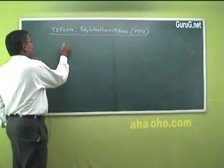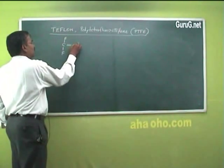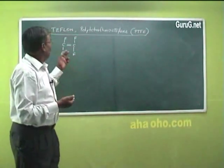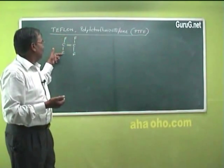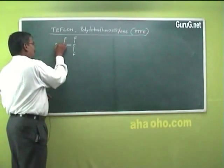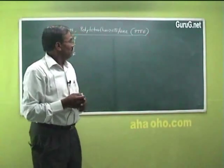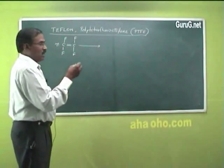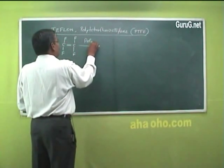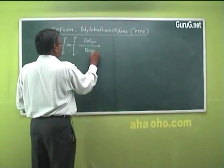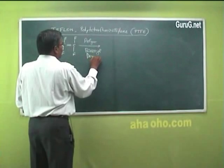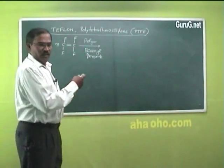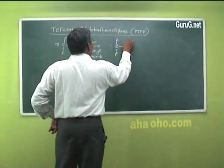Teflon is obtained by the polymerization of tetrafluoroethylene. The structure is similar to ethylene, but in place of four hydrogen atoms, we have four fluorine atoms. As with PVC, we take a water emulsion of tetrafluoroethylene, which on polymerization with benzoyl peroxide as initiator yields this fluorine-containing polymer. Benzoyl peroxide is a widely used free radical initiator used in most polymerizations.